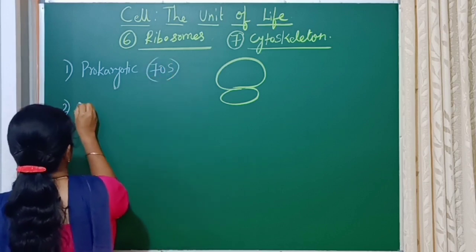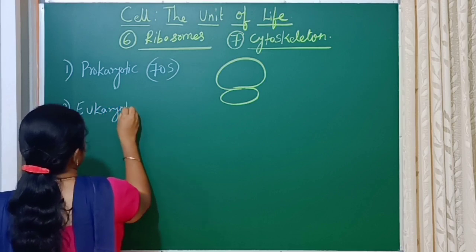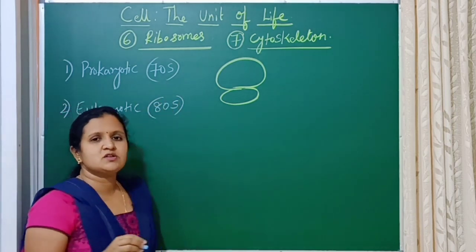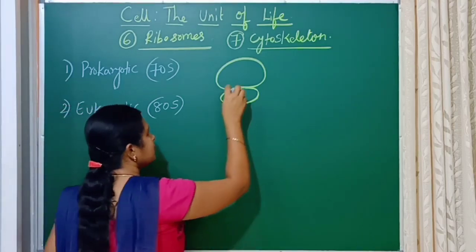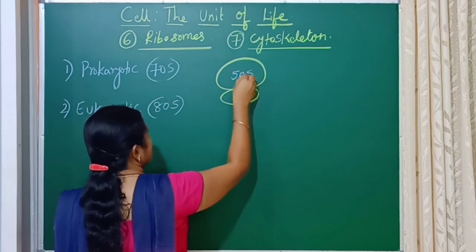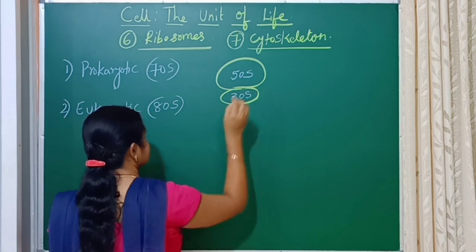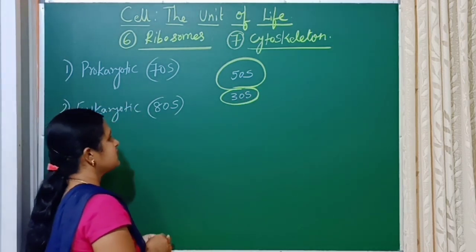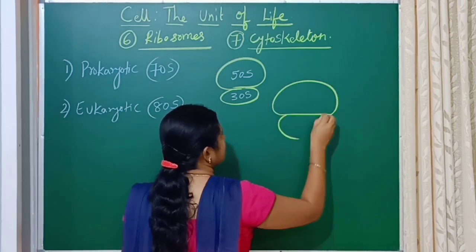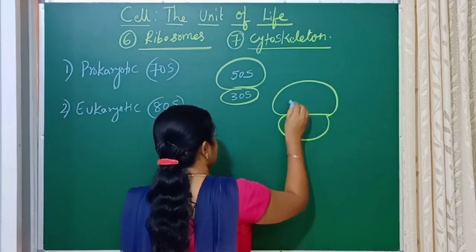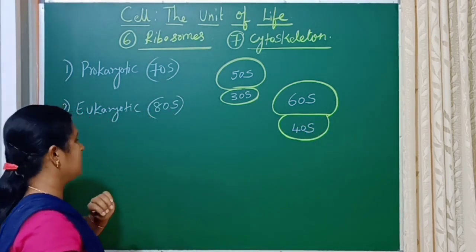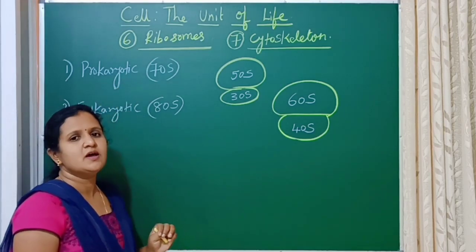In eukaryotic cells, the ribosome is of the 80S type. In prokaryotic cells, there is a larger unit and a smaller unit — the larger unit is 50S and the smaller unit is 30S. In eukaryotic cells similarly, the larger unit is 60S and the smaller unit is 40S. Together they are called 80S in eukaryotes and 70S in prokaryotes.